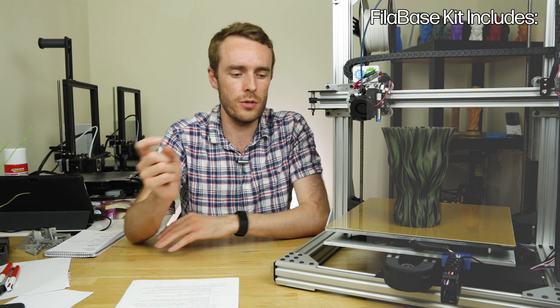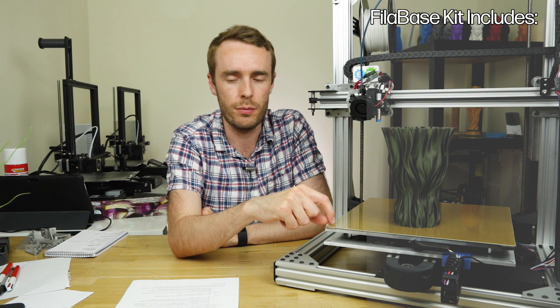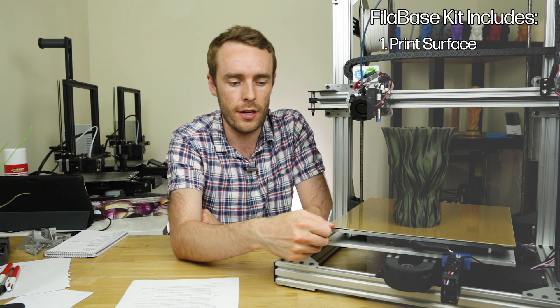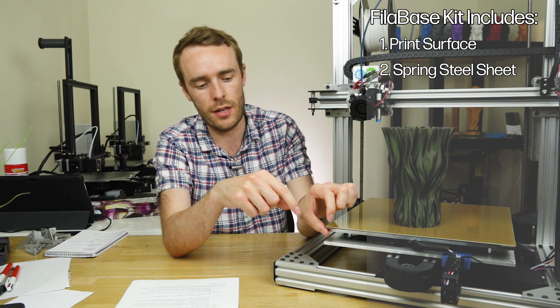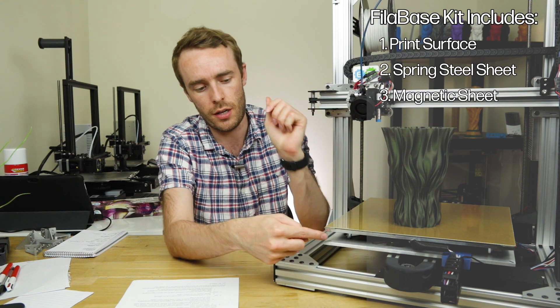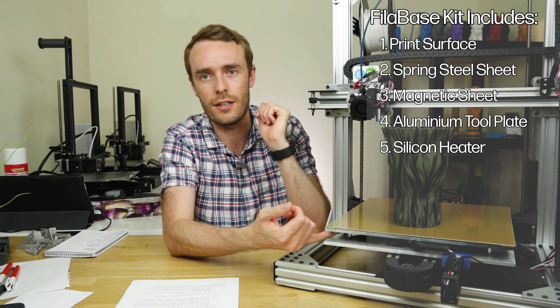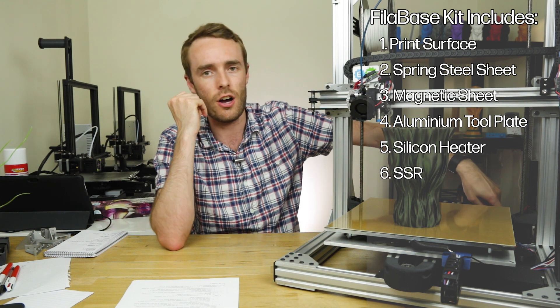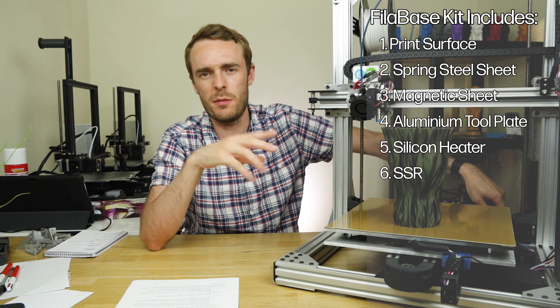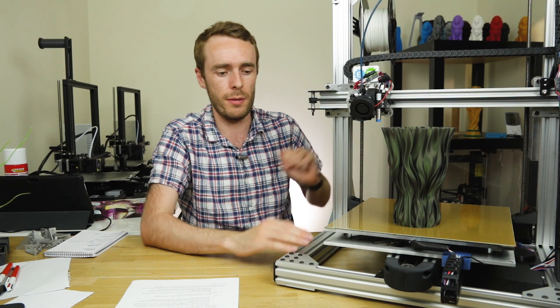So what it includes is firstly the print surface. There's a number of different ones to choose from. You get a spring steel plate, you get the magnetic surface, you get the tool plate, you get the silicon heater, and you get an SSR which is a solid state relay, which is basically an electronic switch for controlling the heat bed.